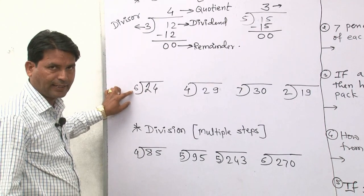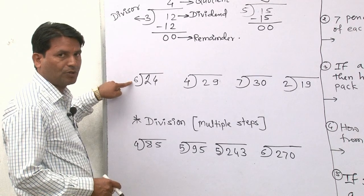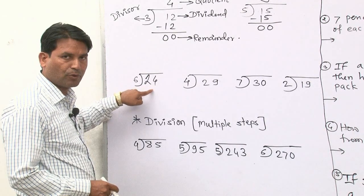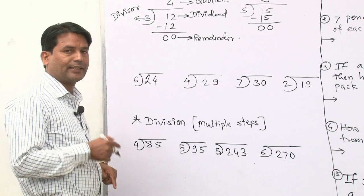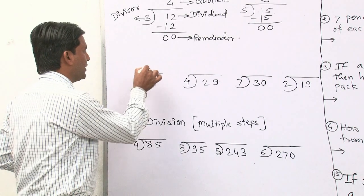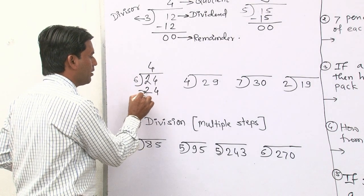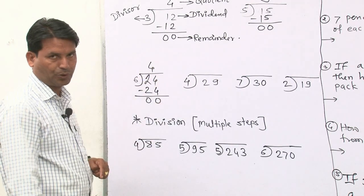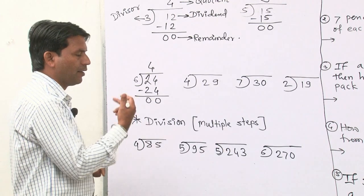Next example: 24 divided by 6. We will count the 6 times table until we reach 24: 6 ones are 6, 6 twos are 12, 6 threes are 18, 6 fours are 24. So if we count the 6 table up to 4, we get 24. So 4 will be your answer.